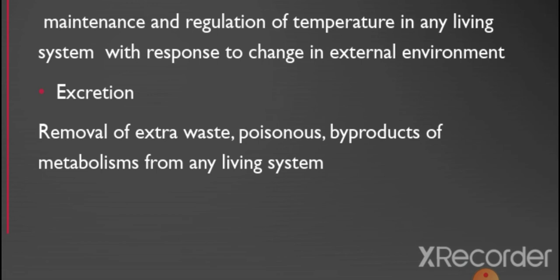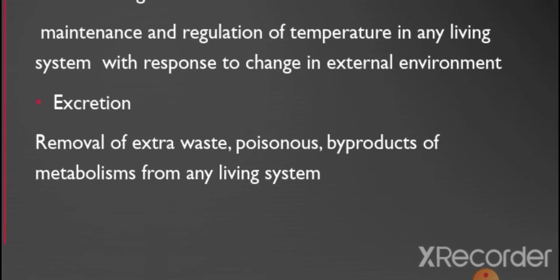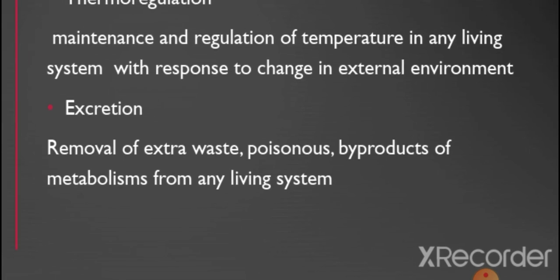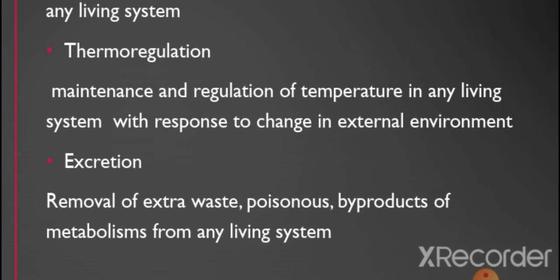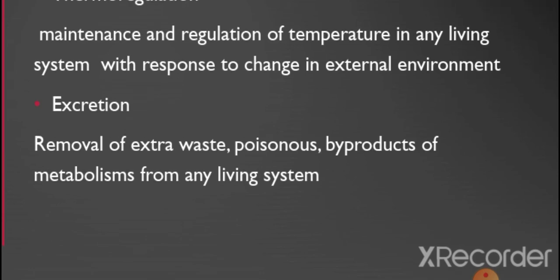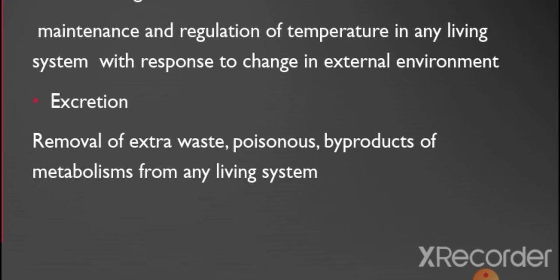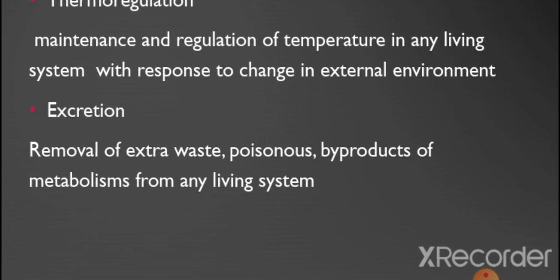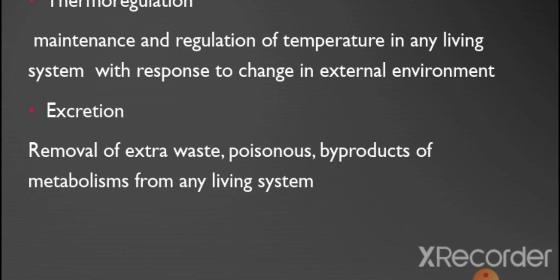There are two processes of excretion for water: transpiration and guttation. These two remove water from the plant. For the removal of carbon dioxide and oxygen, gases exit from the roots, and sometimes from the stomata; the cuticle also has the ability to remove extra carbon dioxide and oxygen. Byproducts stored in the leaves — like latex, resins, gums, and rubber — are also removed from the body. During autumn, when leaves fall from the plant, extra waste products are removed from the body in this way.